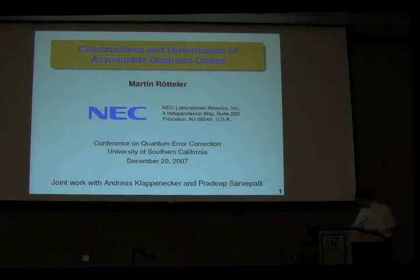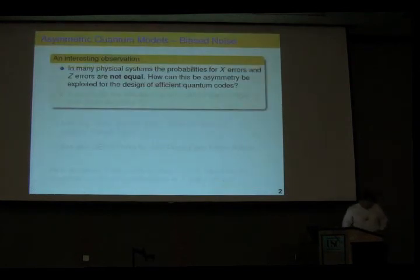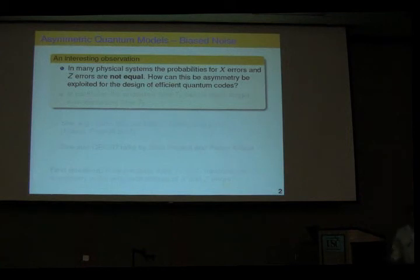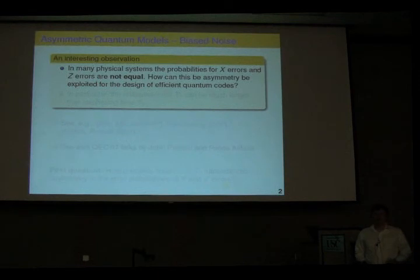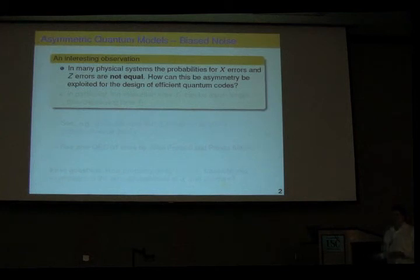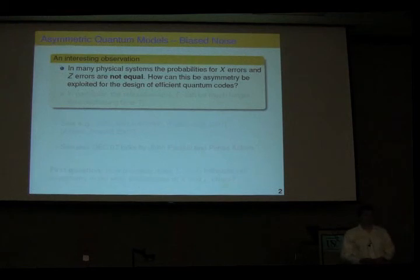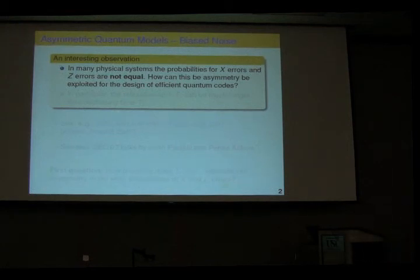What I want to start with is a problem which was already mentioned at this workshop at least twice. It's an interesting observation that in a lot of physical scenarios you don't have a completely symmetric error model. In particular, your Z errors occur at a much higher frequency than your X errors and your Y errors. It's a natural question to ask if we can exploit that somehow in a code design. John asked that question in his talk, and also Panos asked that question in his talk.